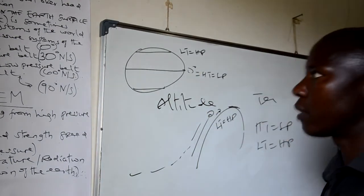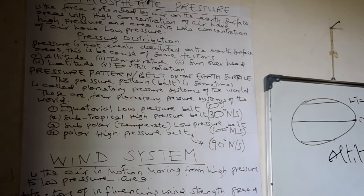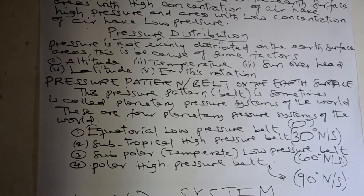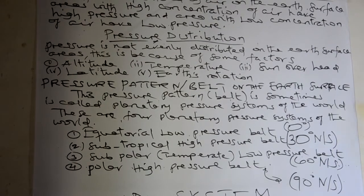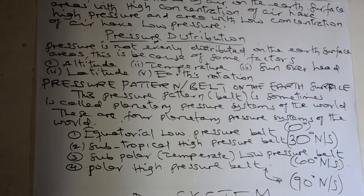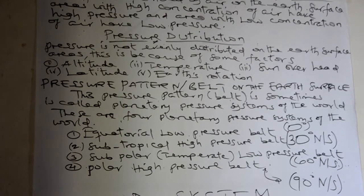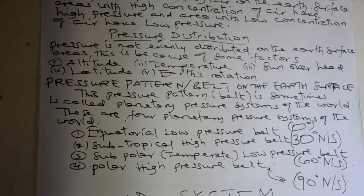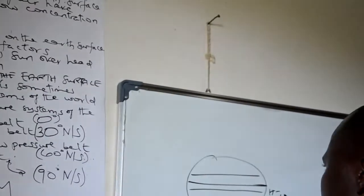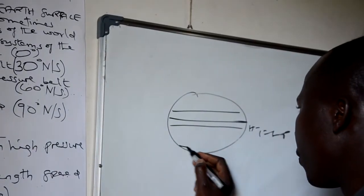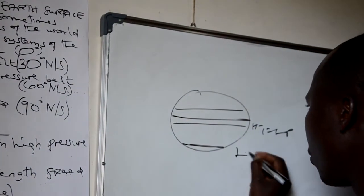Another factor is latitude. Latitude is the angular distance measured on the sphere, running or moving from the equator. As you go further, there is an increase of latitude toward the northern parts up to 90 degrees in the northern hemisphere. Therefore, the latitude which is nearby the equator is associated with high temperature and low pressure. But when the latitude is far away from the equator, for example toward the polar region, it is associated with low temperature and high pressure.